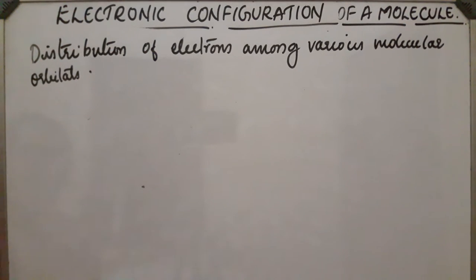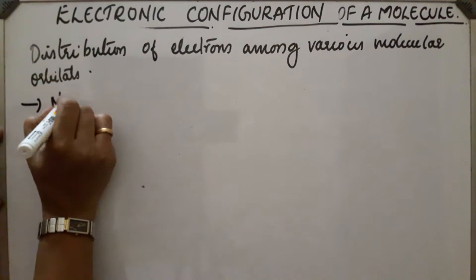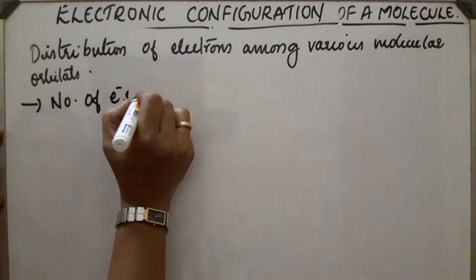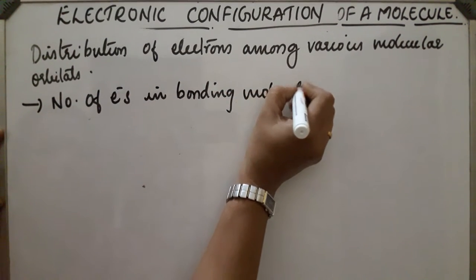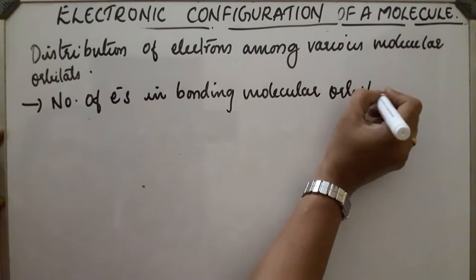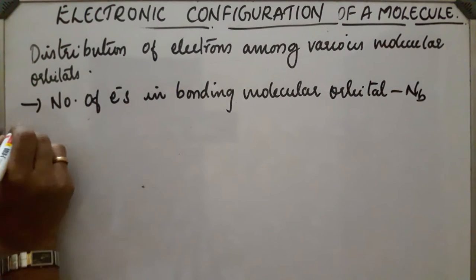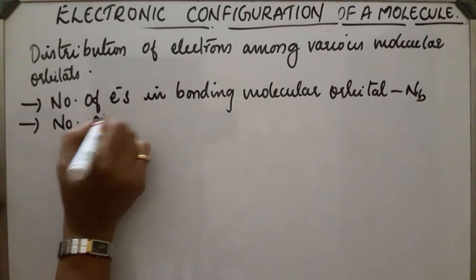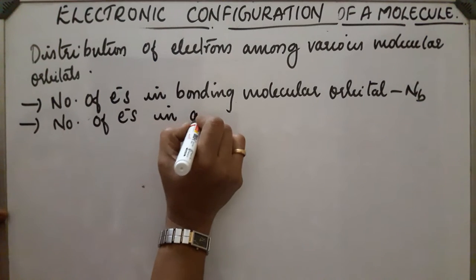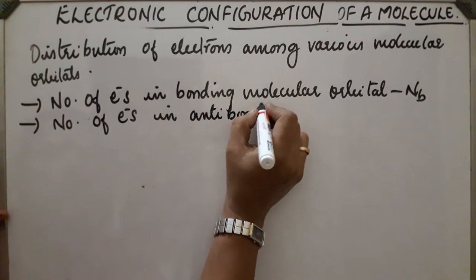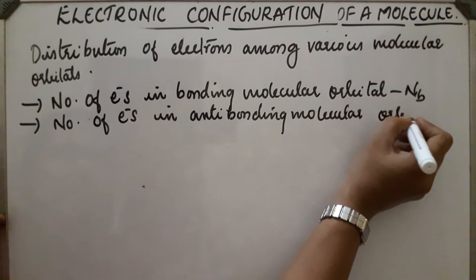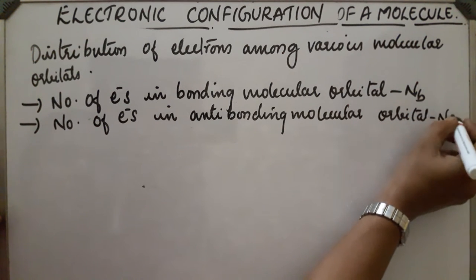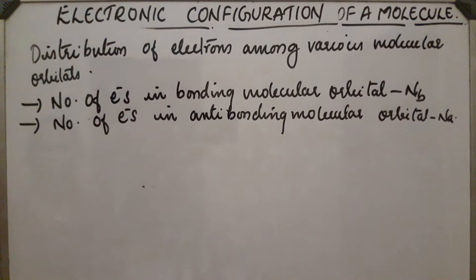From electronic configuration, we can find the number of electrons present in bonding molecular orbital, which can be represented as N.B., and also the number of electrons in anti-bonding molecular orbital, represented as N.A. From N.B. and N.A., we can find the stability of the molecule.